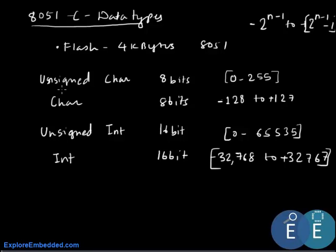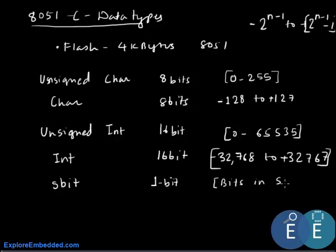There are additional data types specific to 8051 C programming. The first is sbit, which is 1 bit in size and is used to access individual bits in special function registers or ports such as Port 0 and Port 1. The second is bit, also 1 bit in size, and it is used to access the bit-addressable RAM.